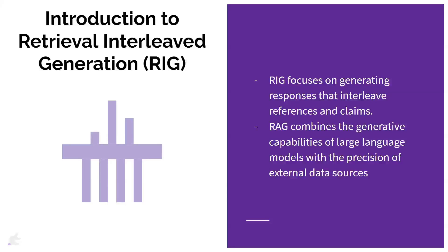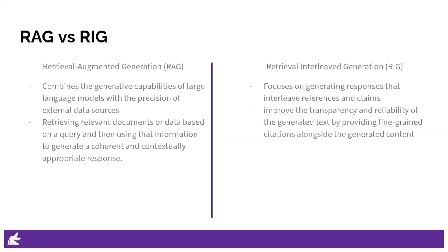RAG combines the generative capabilities of large language models with the precision of external data sources. This technique enhances the accuracy and reliability of generative AI models by fetching facts from external sources, allowing the model to produce more informed and contextually relevant responses. RAG operates by retrieving relevant documents or data based on a query and then using that information to generate a coherent and contextually appropriate response. This approach is particularly useful for knowledge-intensive tasks, as it allows the model to ground its outputs in factual information.